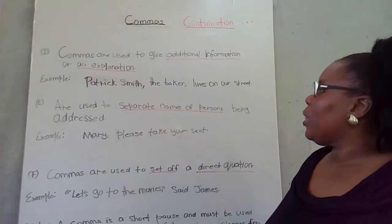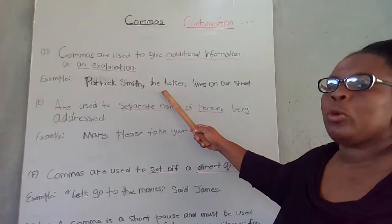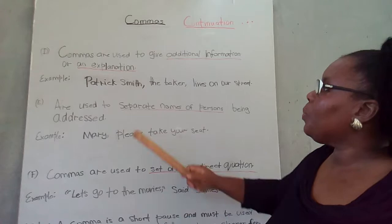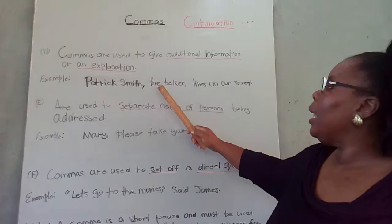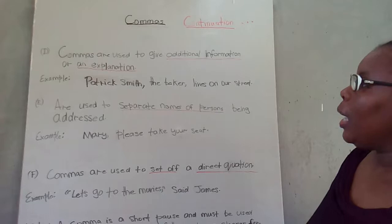Patrick Smith — who is Patrick Smith? He's the baker and he lives on our street. So here is the additional information about Patrick Smith: he's a baker, comma, he lives on our street. So Patrick Smith, the baker, lives on our street. You know that Patrick Smith not only lives on our street, but he's also a baker.